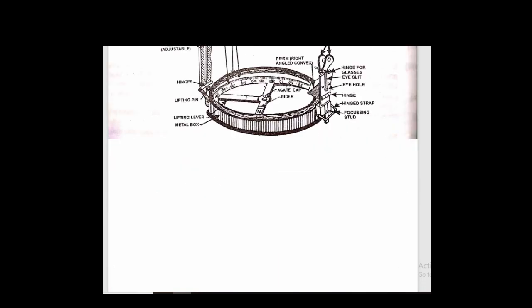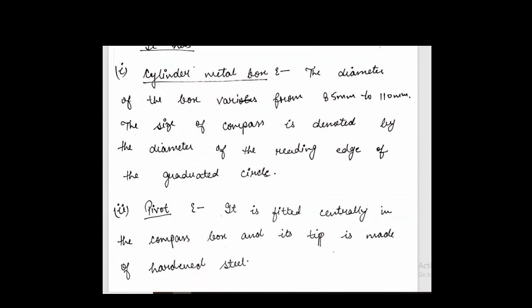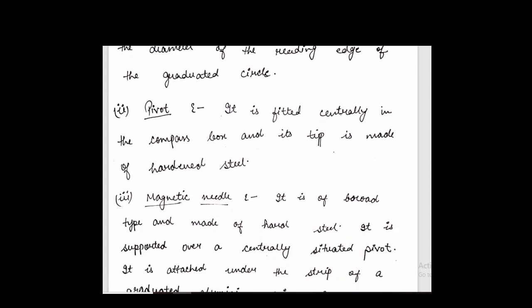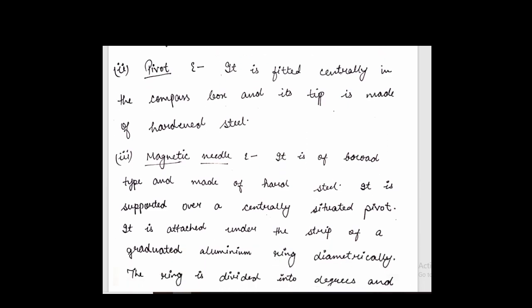The slender metal box is made of 85 by 110 mm. It is made of circular ring, slender metal box. Then pivot is fixed centrally in the compass box, and its tip is made of hardened steel. With the compass, the magnetic needle is attached.